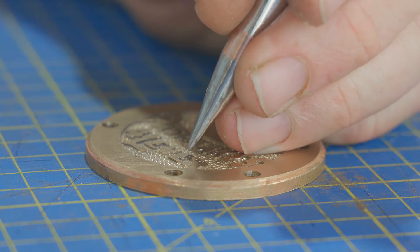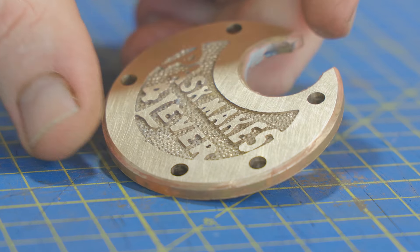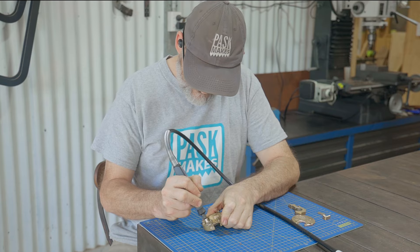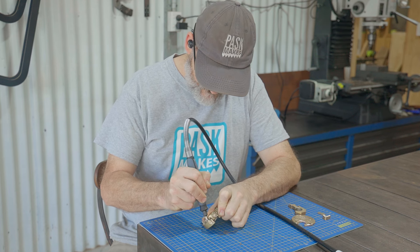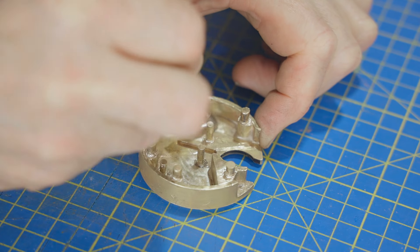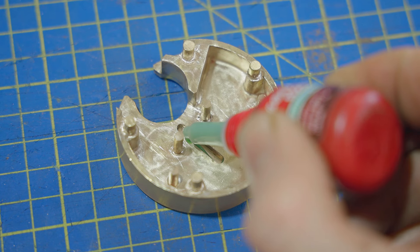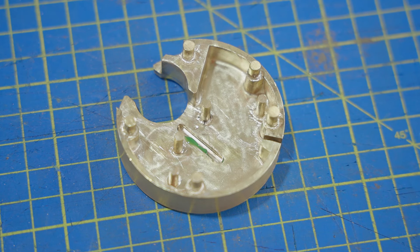It actually didn't take that long to do, maybe about 20 minutes or so and it doesn't look too bad at all. I'll start cleaning everything up ready to assemble. The key can't go anywhere when it's together but it won't hurt to glue it in.